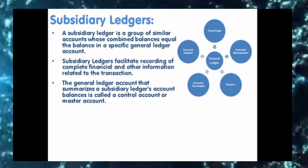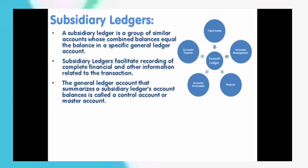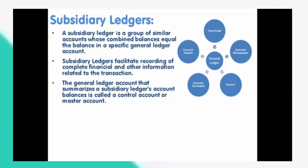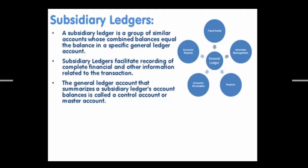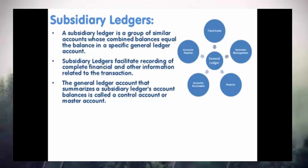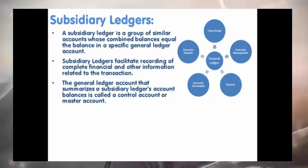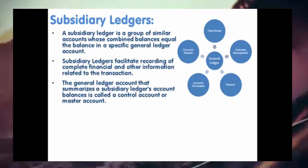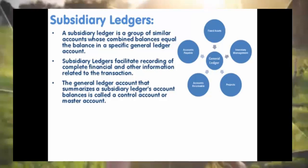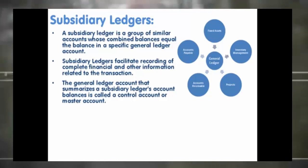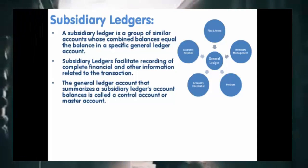The General Ledger account that summarizes a subsidiary ledger's account balances is called a Controller or Control Master account. Accounting transactions are captured in General Ledger at a summarized level and all relevant details for that transaction are available in the subsidiary ledgers. Commonly used subsidiary ledgers include fixed assets, accounts payable, accounts receivable, projects, and inventory management — they all send financial data to the General Ledger. To understand subsidiary ledgers, consider accounts receivable: it is a subsidiary ledger that includes a separate account for each customer who makes credit purchases. The combined balance of every account in this AR subsidiary ledger equals the balance of the accounts receivable account in the General Ledger. The accounts receivable account is also known as the customer receivable control account.